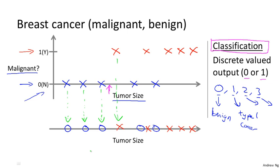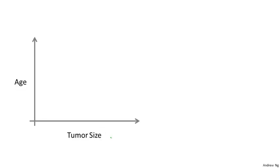Okay, I hope this figure makes sense. All I did was I took my dataset on top, and I just mapped it down to this real line, and started to use different symbols, circles and crosses, to denote malignant versus benign examples. Now, in this example, we use only one feature, or one attribute, namely the tumor size, in order to predict whether a tumor is malignant or benign.